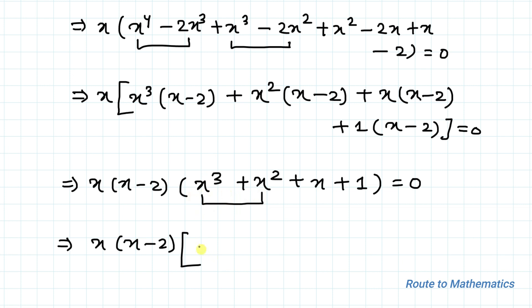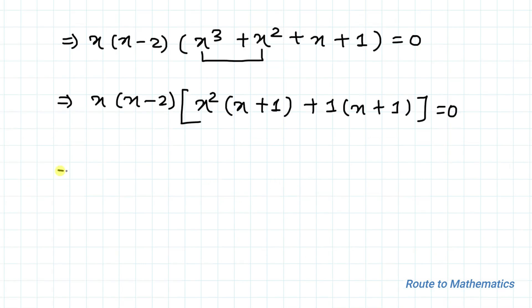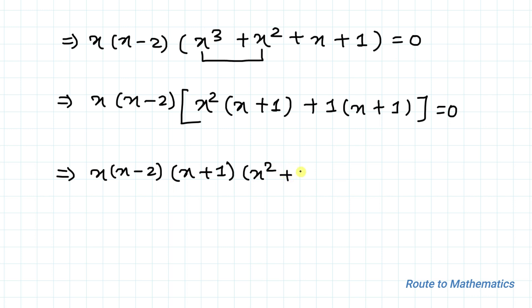This implies x multiplied with (x minus 2) multiplied with — taking x squared common from the first two terms gives x squared times (x plus 1), plus 1 times (x plus 1). So we get x times (x minus 2) times (x plus 1) times (x squared plus 1) equals 0.